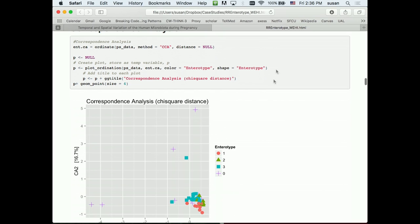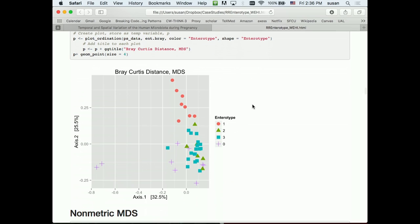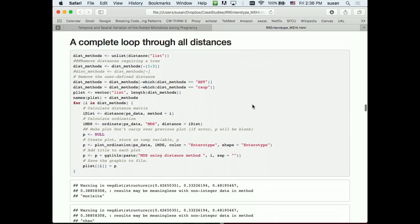But we also have the Bray-Curtis distance, which is a distance between proportions which the ecologists like a lot. And so when I said about multiplicity of choices, there's a real problem there.